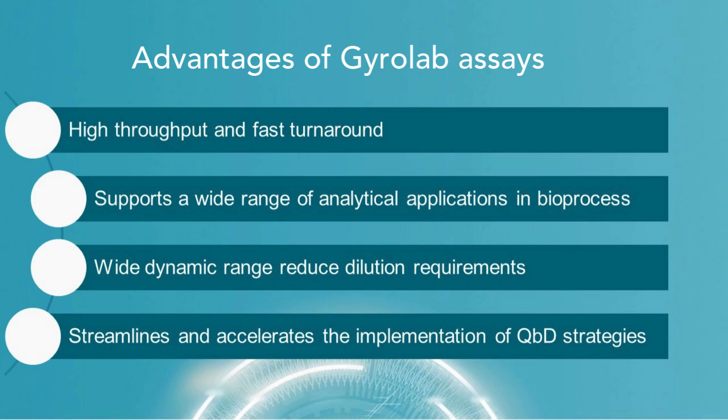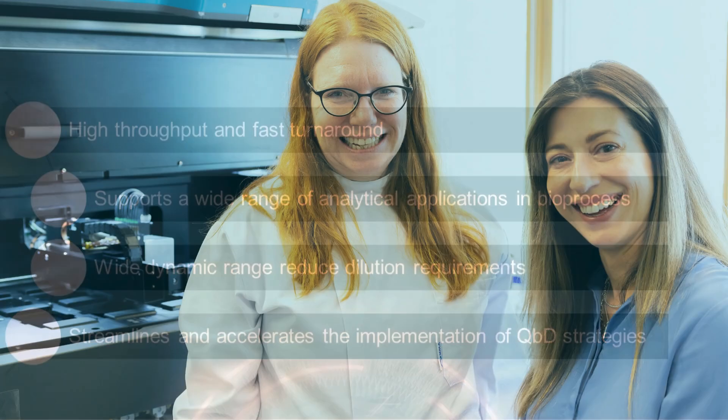In addition, Gyrolab has a wider dynamic range, meaning it can accurately measure a wider concentration range of analytes in a sample without dilution steps. The Gyrolab system is designed for automation, which reduces the possibility of manual errors that can occur during sample processing, resulting in reproducibility and reliability between runs.